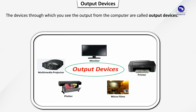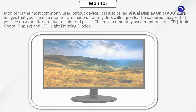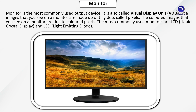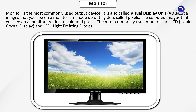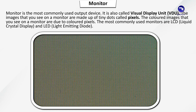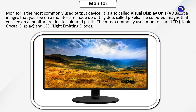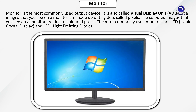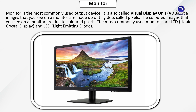Output Devices: The devices through which you see the output from the computer are called output devices. Monitor is the most commonly used output device. It is also called Visual Display Unit. The images you see on a monitor are made up of tiny dots called pixels. The most commonly used monitors are LCD (Liquid Crystal Display) and LED (Light Emitting Diode).